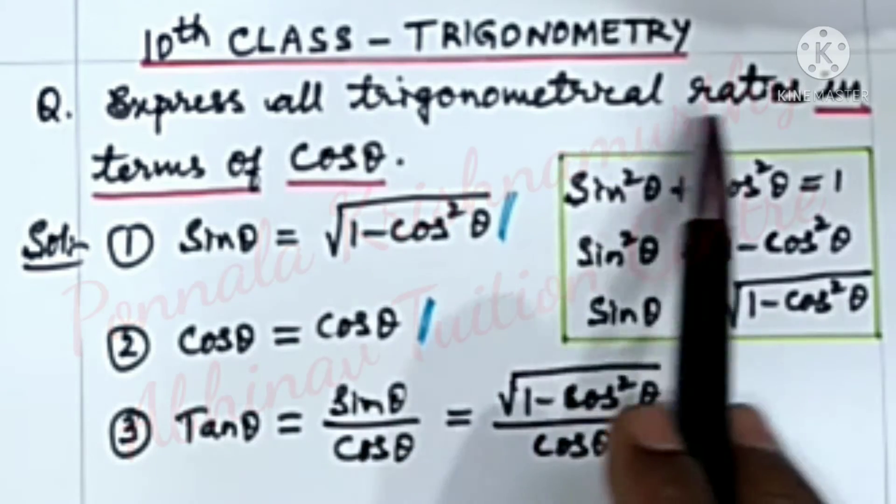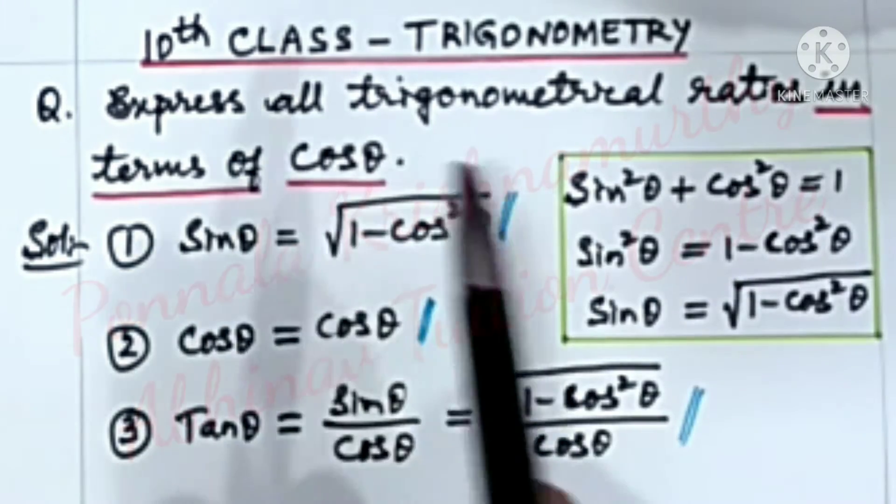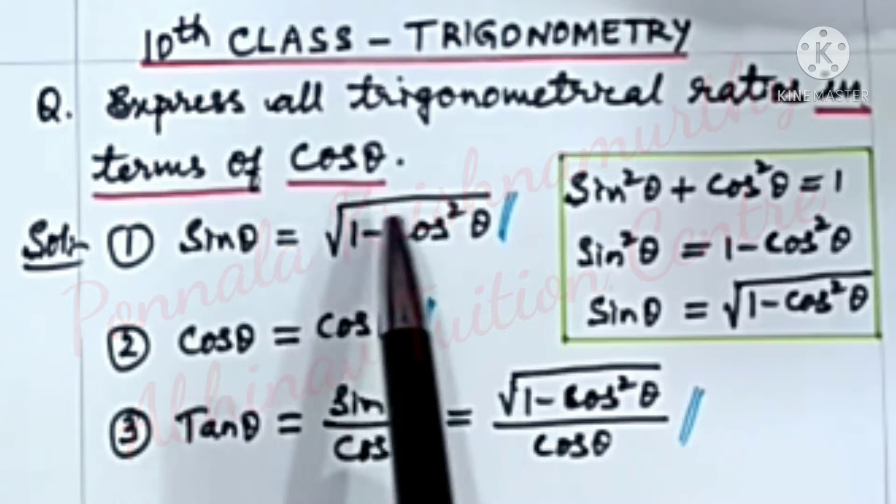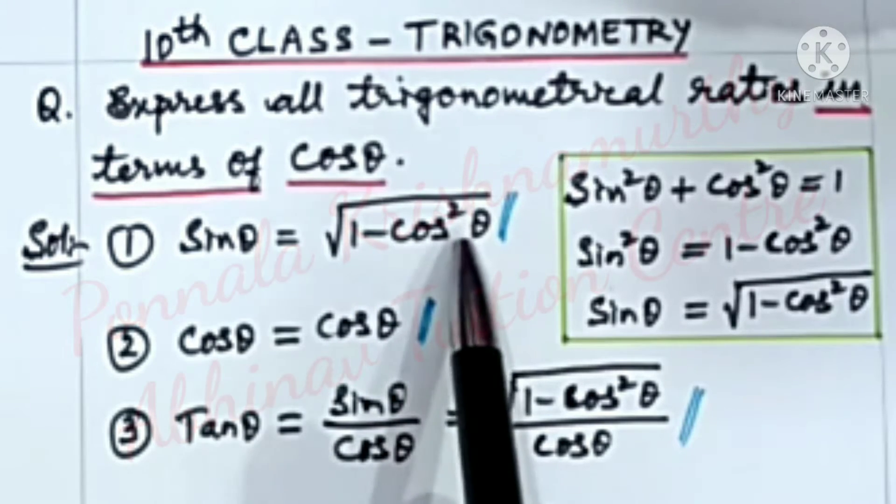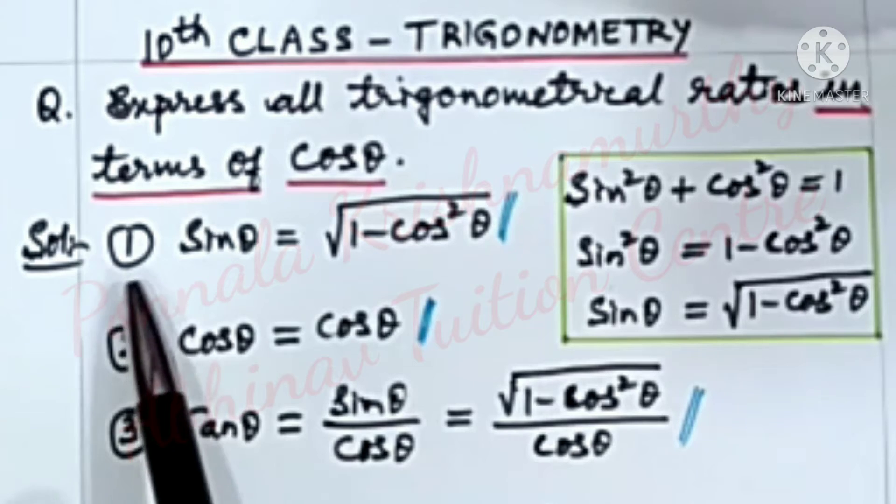Express all trigonometrical ratios in terms of cos theta. Now, we have to get cos theta in RHS. Number one,